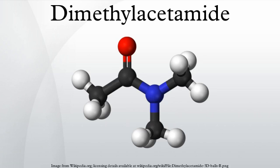Synthesis, reactions, applications. DMA is prepared by the reaction of dimethylamine with acetic anhydride and esters of acetic acid. Dehydration of the salt of dimethylamine and acetic acid also furnishes this compound: CH3CO2H·HN(CH3)2 → H2O + CH3C(O)N(CH3)2.